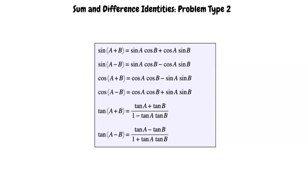This is an exploration of Sum and Difference Identities Problem Type 2. For this type of problem, we'll be given an expression that matches the right side of the trigonometric identities shown here, and we will be asked to find the exact answer for the expression.